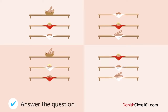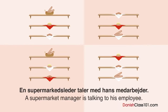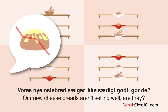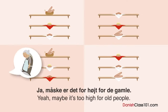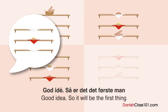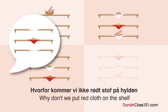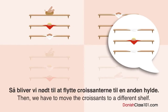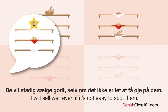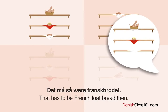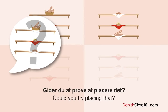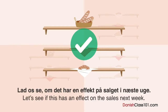Hvordan vil de arrangere brødet? En supermarkedleder taler med hans medarbejdere. Ostebrødet sælger ikke særlig godt - måske fordi det var på den øverste hylde, for højt for de ældre. Hvad med at sætte dem på den midterste hylde? God idé. Sæt rødt stof på hylden for at fremhæve det nye brød. Så skal croissanterne flyttes - øverst eller nederst? Den mest populære vare øverst - det er fransbrødet. Hvad med at placere dem i en kurv for at skille sig ud? God idé. Croissanterne i bunden. Lad os se om det har en effekt på salget i næste uge.